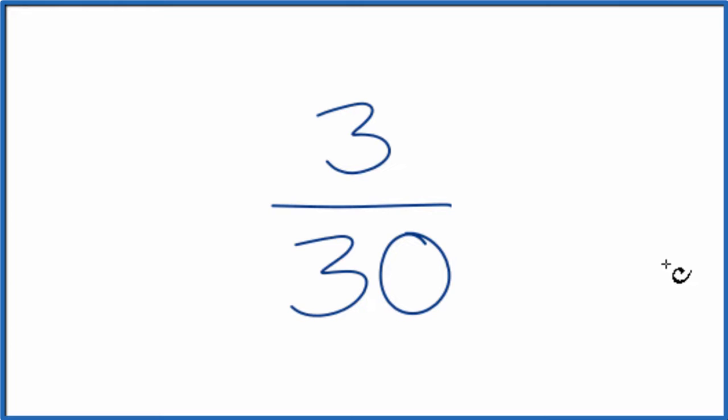So we need to find a common factor for both 3 and for 30. I know that 3 divided by 3 is 1. 30 divided by 3, that's 10. So let's do that.